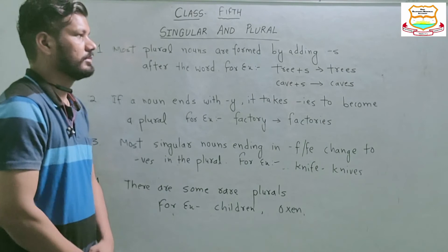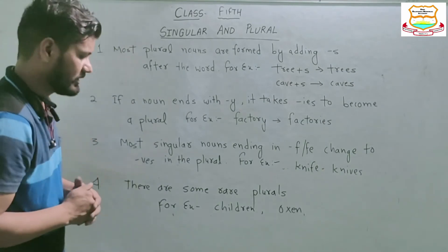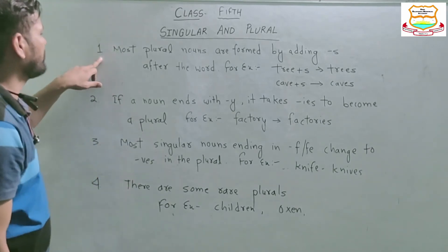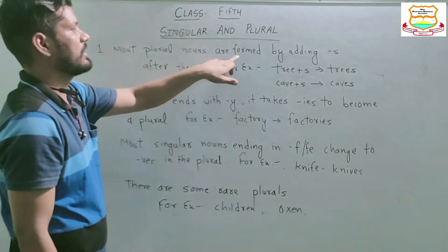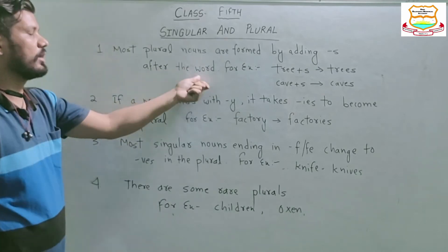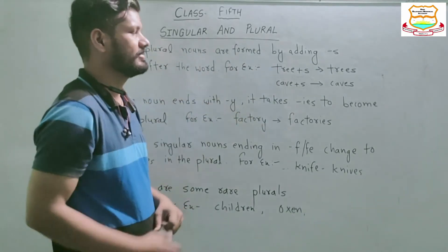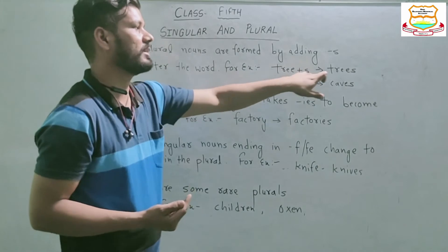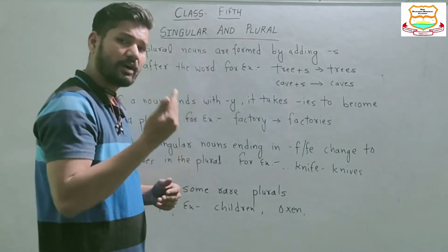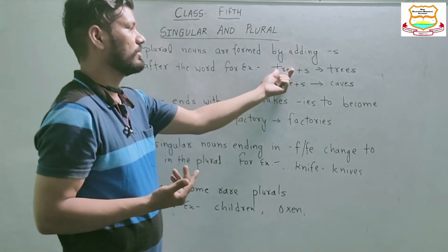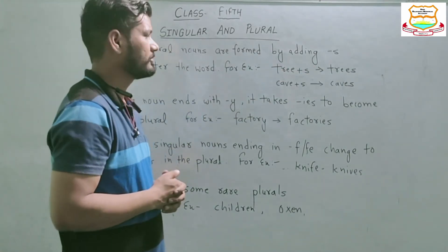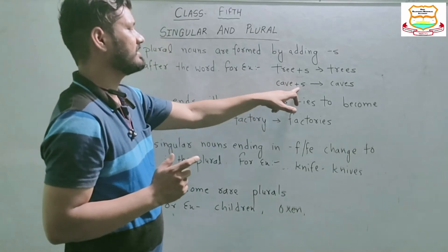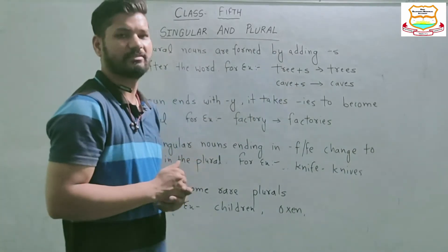Now we will learn how we can change singular nouns to plural nouns. The first rule: most plural nouns are formed by adding 's' after the word. For example, 'tree' is a singular noun. When 's' is added, it becomes 'trees', meaning more than one tree. Likewise, 'cave' becomes 'caves', which means more than one cave.